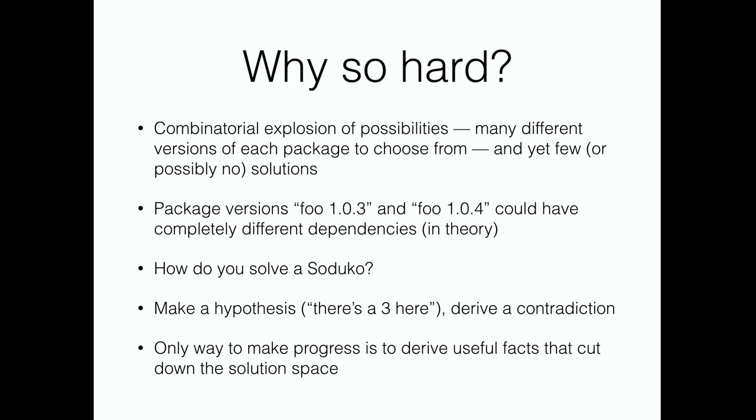Why is it so hard? There's a combinatorial explosion of possibilities. Depending on your starting point, depending on whether you have a .meteor versions file in your project, there might be many different versions to choose from for each package. And there's nothing that says different versions of the same package have to have similar dependencies at all. Usually when you write a package, you depend on maybe one or ten other packages, and they only change a little bit from version to version, but we can't make that assumption in general.